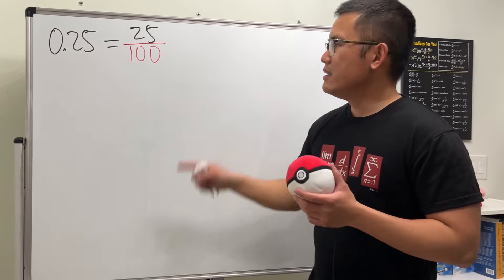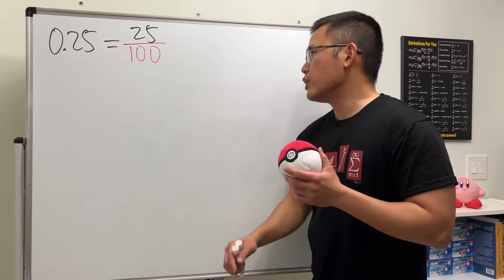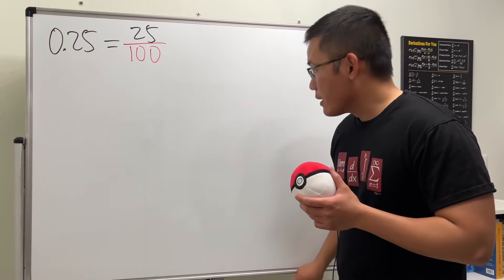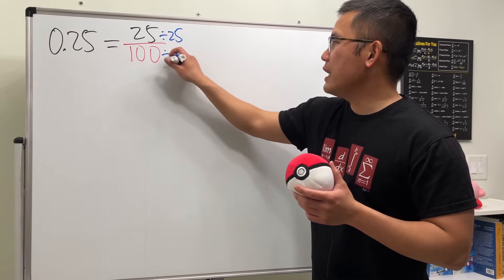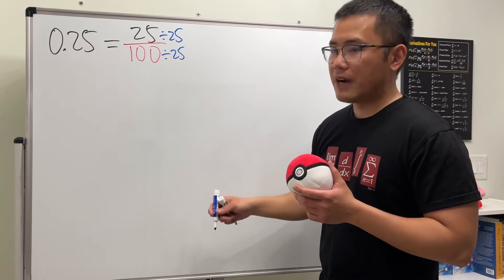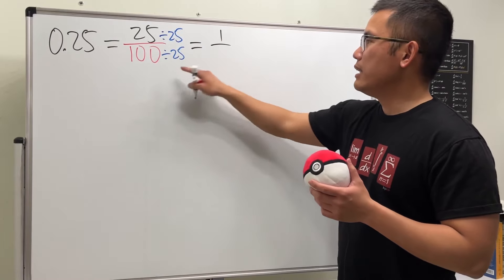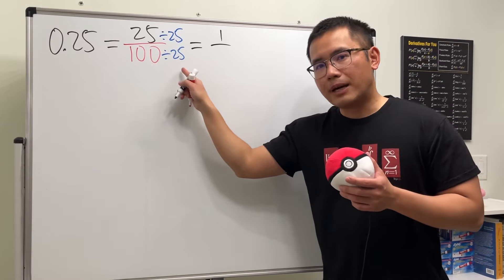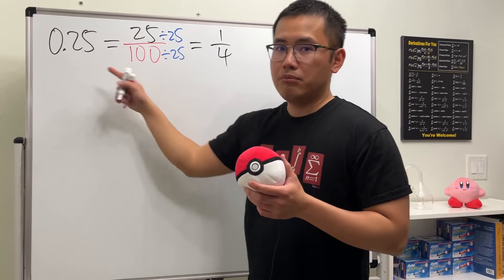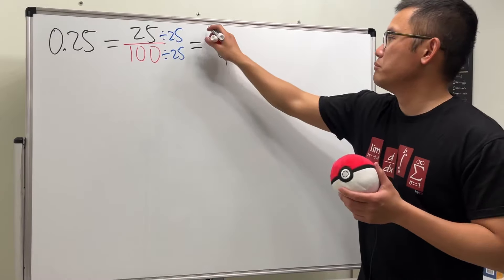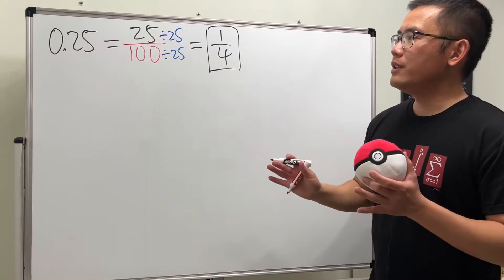You see two places here and you put two zeros with the one in front. Can we reduce 25 over 100? Yes — we divide the top by 25 and the bottom by 25. The top is equal to 1, and 100 divided by 25 equals 4. So 0.25 is equal to one quarter.